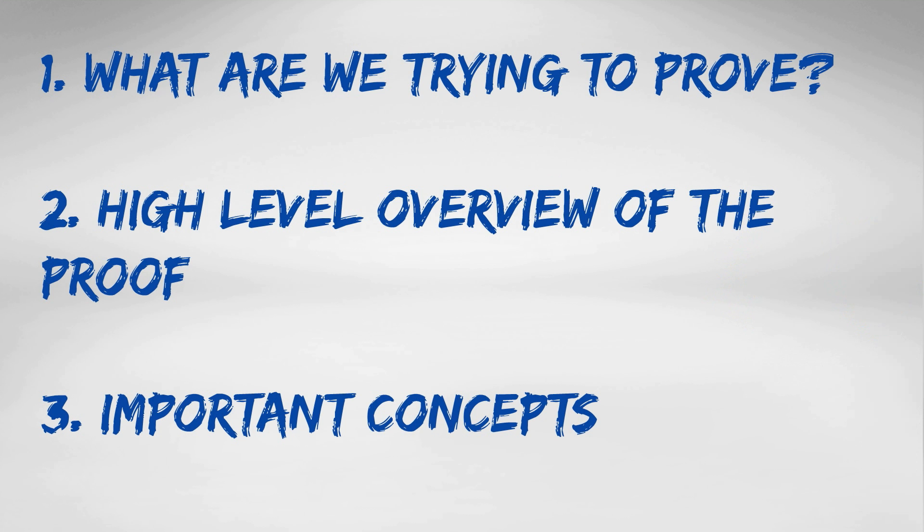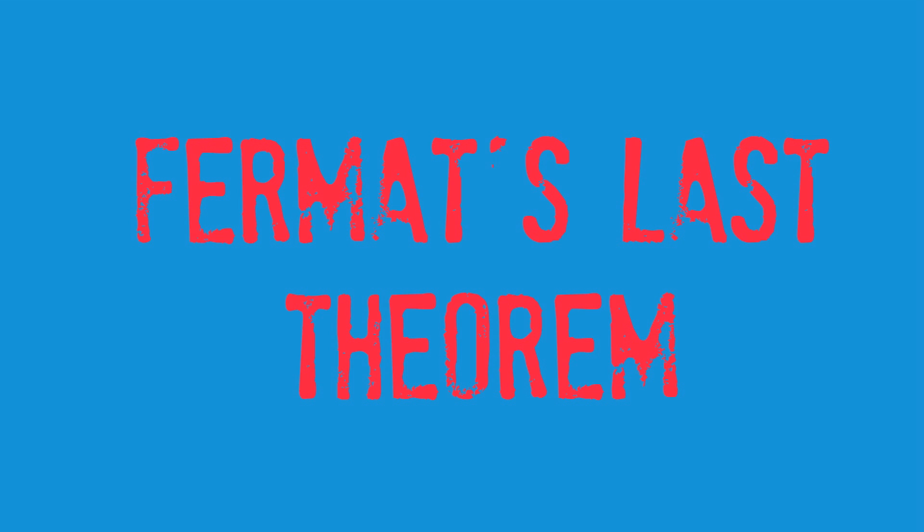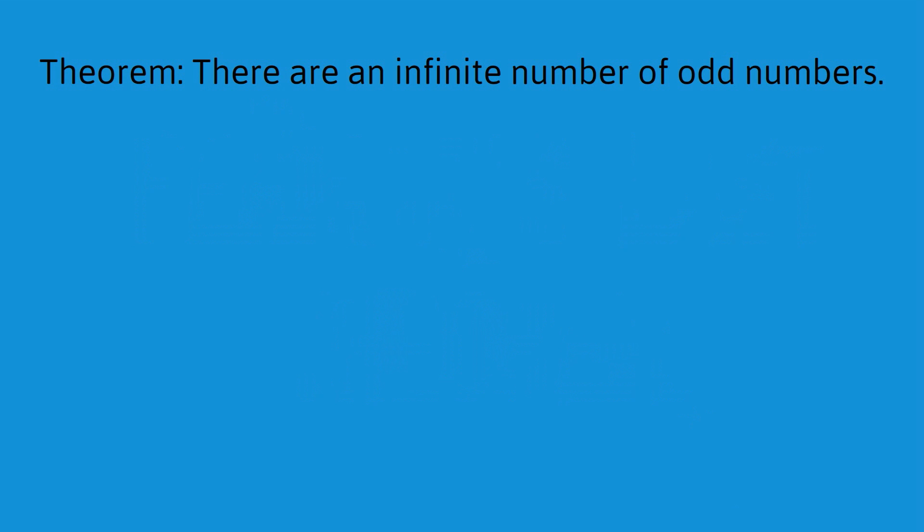So, we're continuing to work our way through a high-level overview of the proof. And we've just established that we can simplify the problem a little bit. Now, there are many ways to prove things. The proof of Fermat's Last Theorem is a proof by contradiction. And I just want to go through a very simple example of proof by contradiction so that we can then better appreciate and understand the high-level overview of the proof of Fermat's Last Theorem.